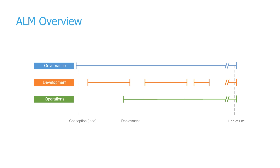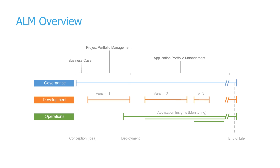An overview of application lifecycle management can be described with three different areas: governance, development, and operations. The governance area, shown here in blue, spans the entire lifecycle from the conceptual idea to end of life. Development typically starts when we have a project or initiative, and when we deploy, we deploy to the operations side — shown as the green line at the bottom.